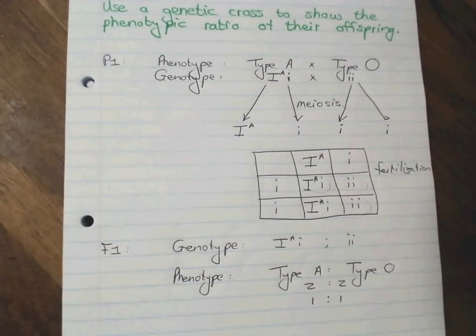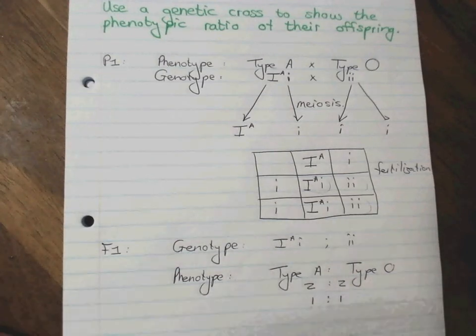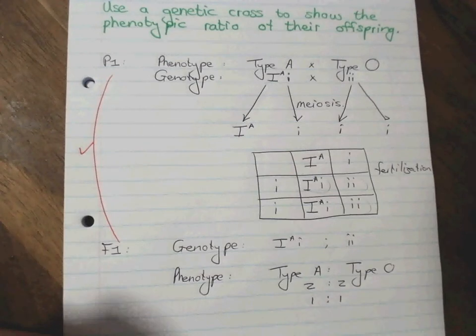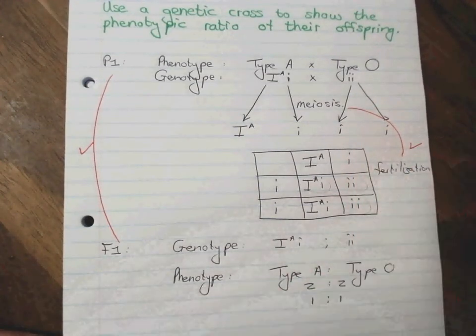Right. Let's quickly have a look at where you would get marks. So the easy marks are P1 and F1. Those are always worth the mark. As well as meiosis and fertilization.